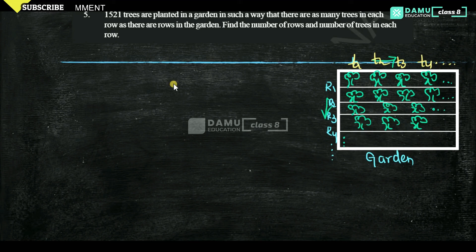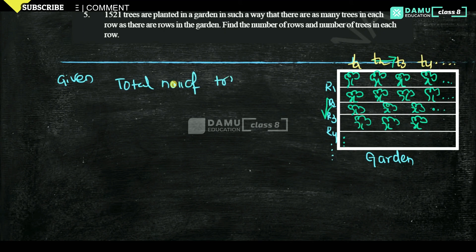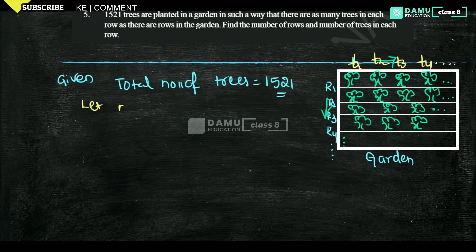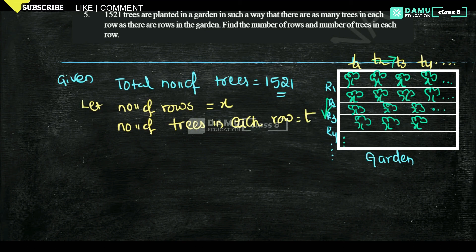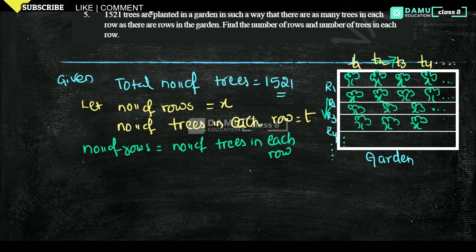The given condition is: number of rows equals number of trees in each row. So let number of rows in the garden be x, and number of trees in each row be t. The given condition is rows equal to trees in each row, that means x will be equal to t.